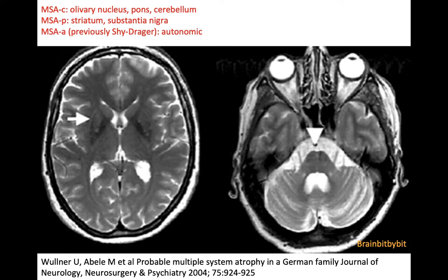Clinically, there are three subtypes. MSA-C with atrophy of the inferior olive, pons, and cerebellum. Then there's the one with Parkinsonism, with atrophy of the striatum and substantia nigra. And if there are mainly autonomic symptoms, it's the form that was previously called Shy-Drager.